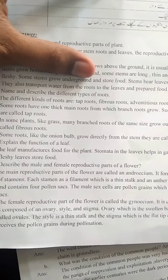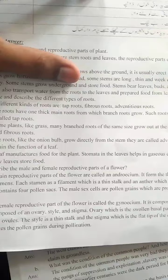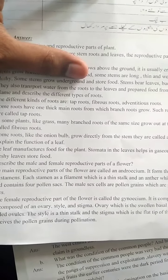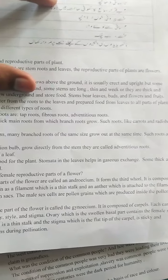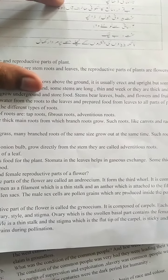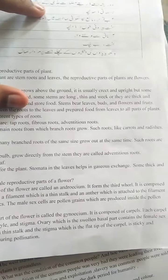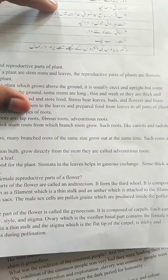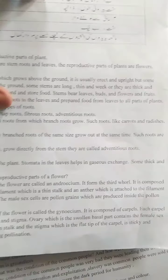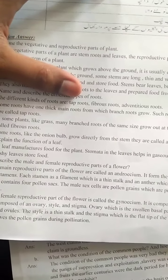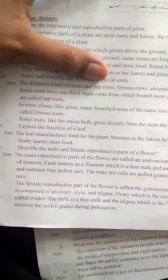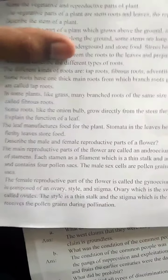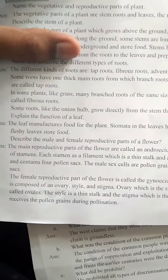The leaves manufacture food for the plant through photosynthesis. Stomata in the leaves help in gaseous exchange — oxygen gas and carbon dioxide gas are absorbed. Some thick and fleshy leaves store food. This is the function of the leaf.